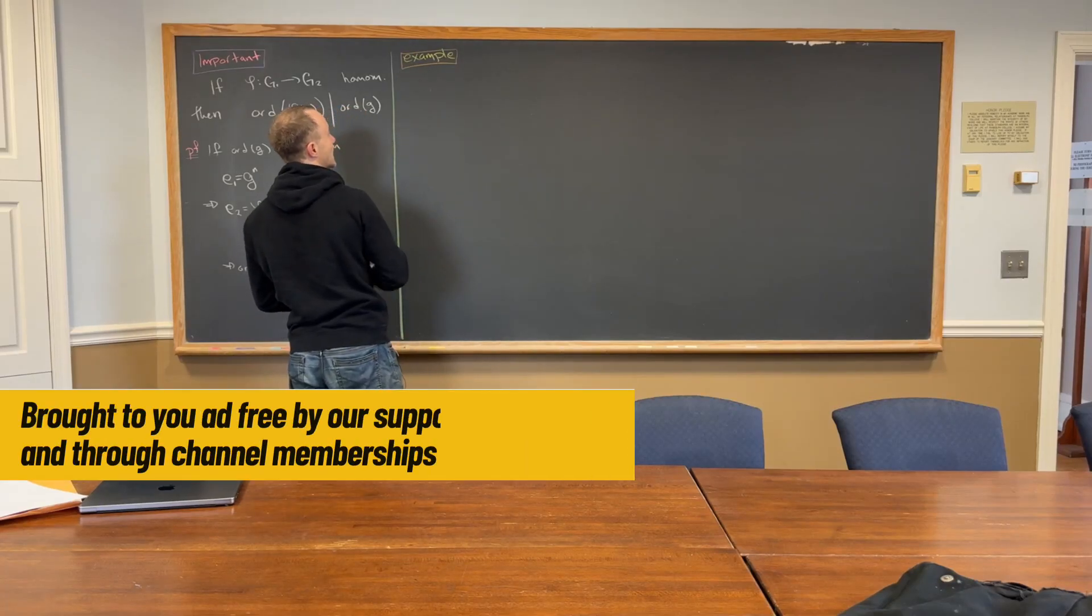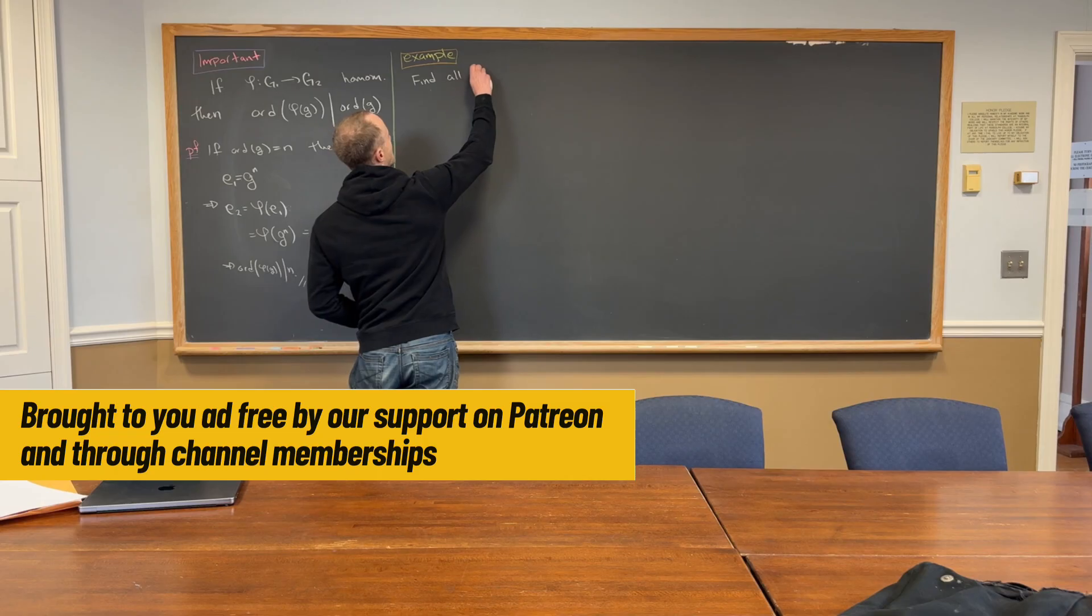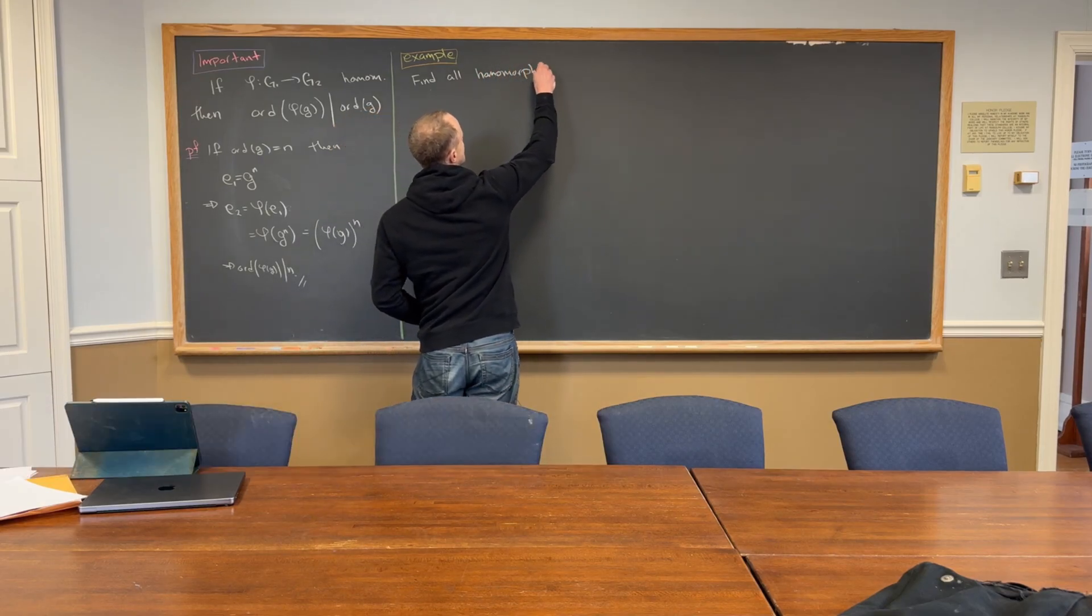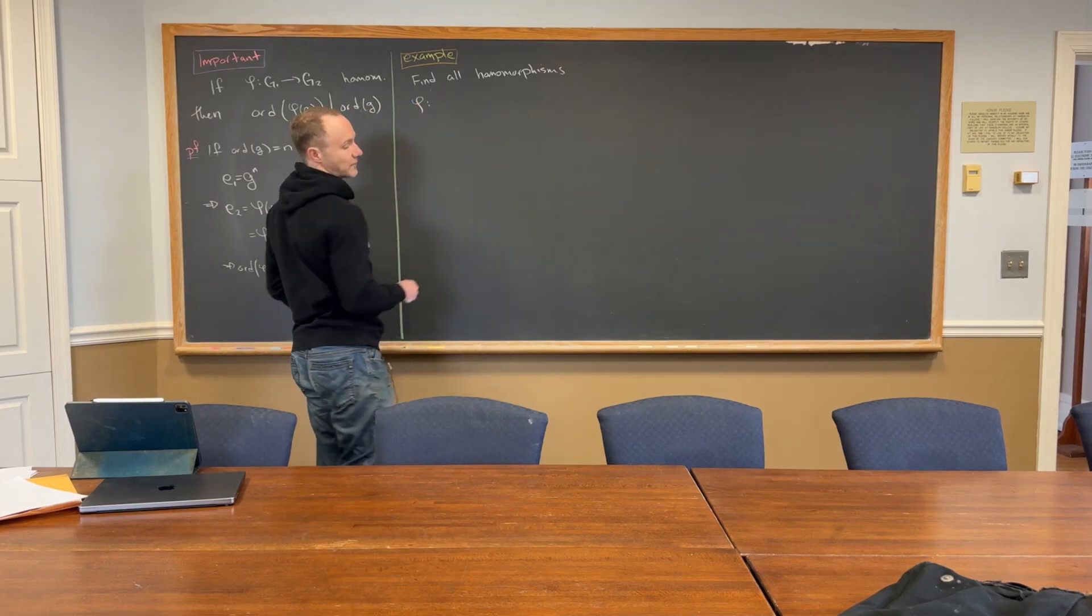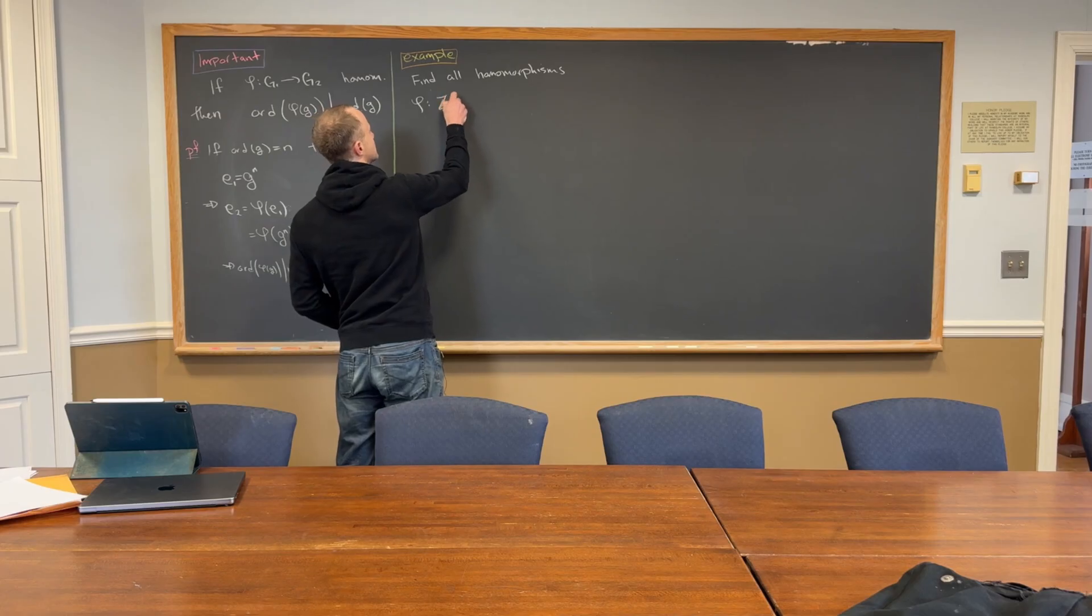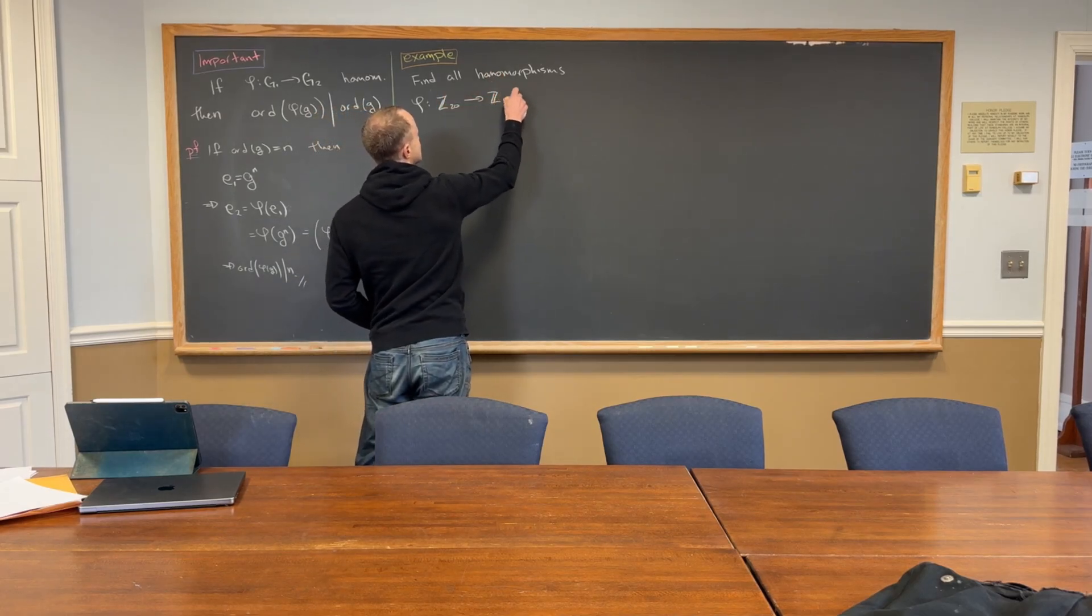Okay, so let's find all homomorphisms, we'll call them phi, from Z20 to Z12.